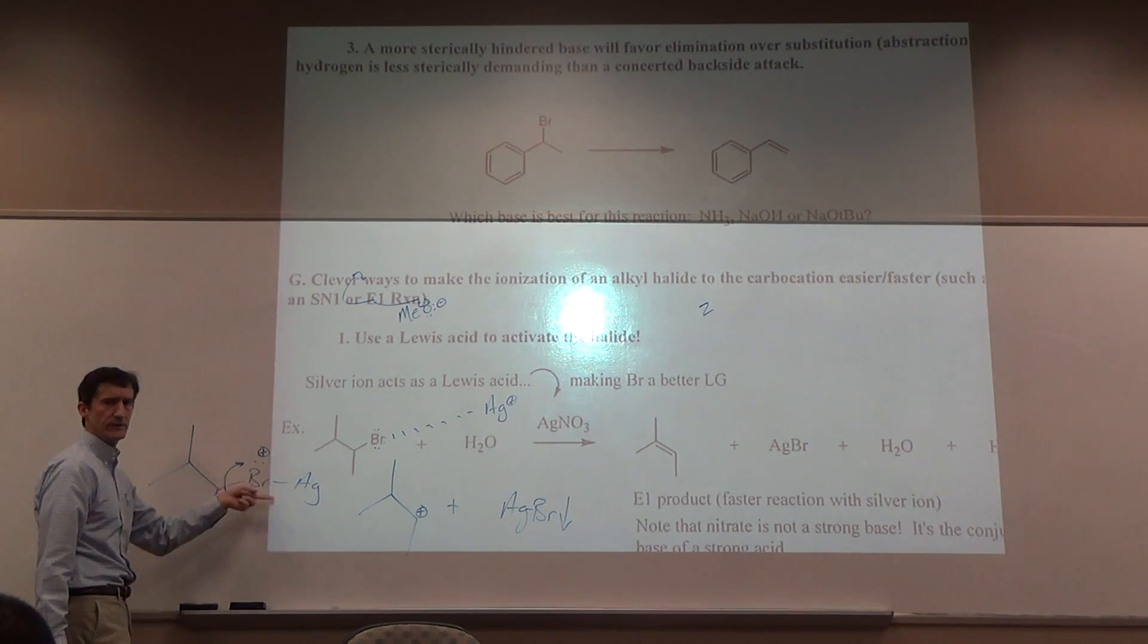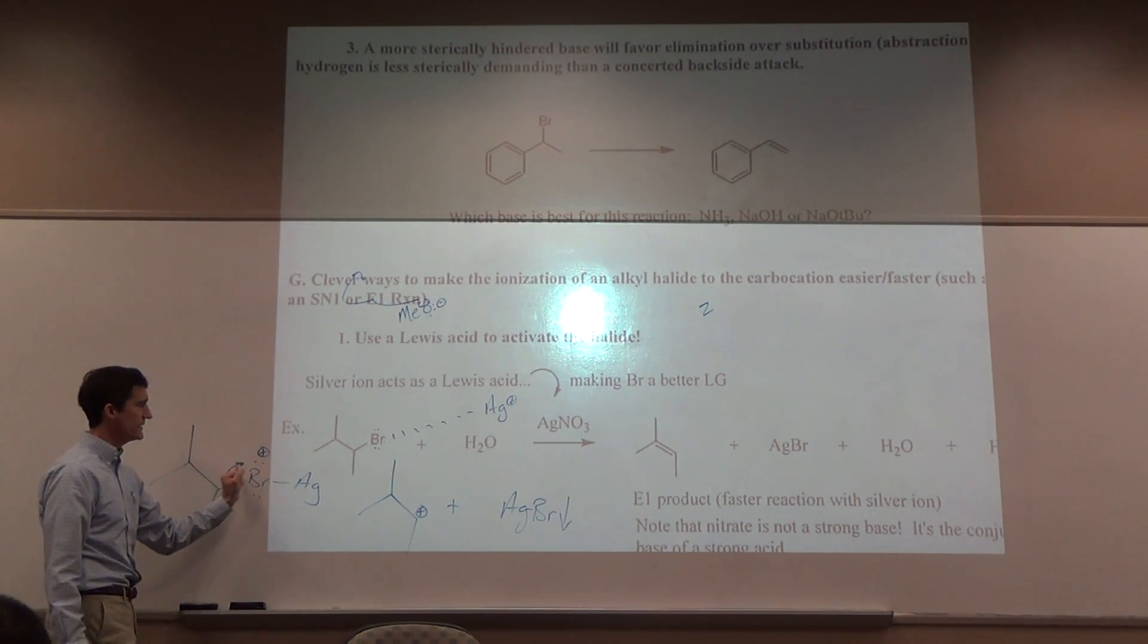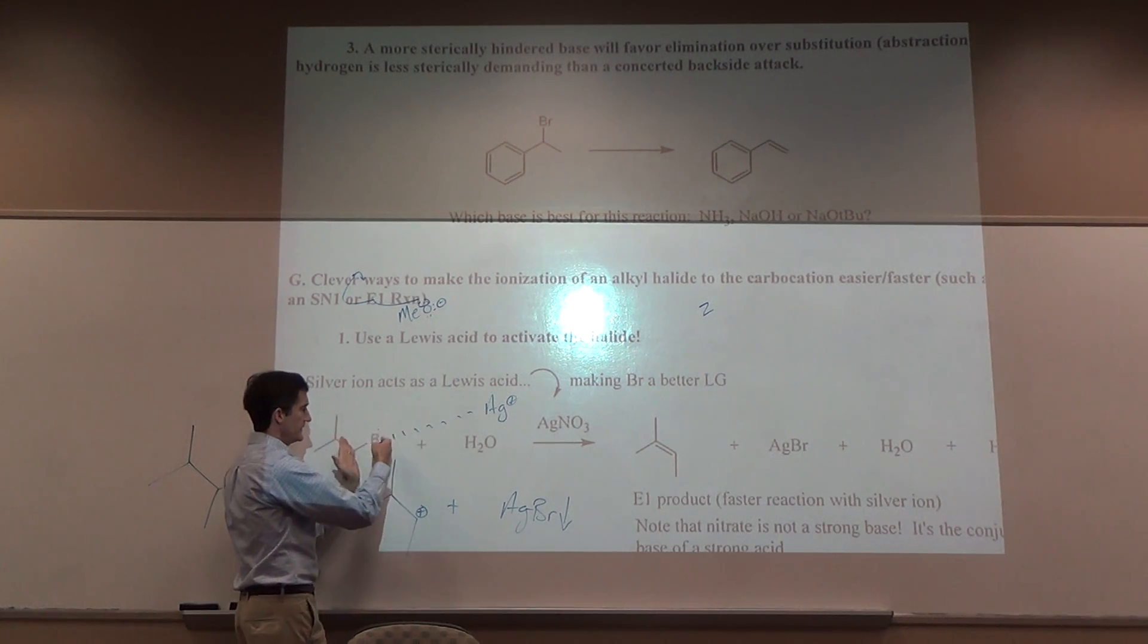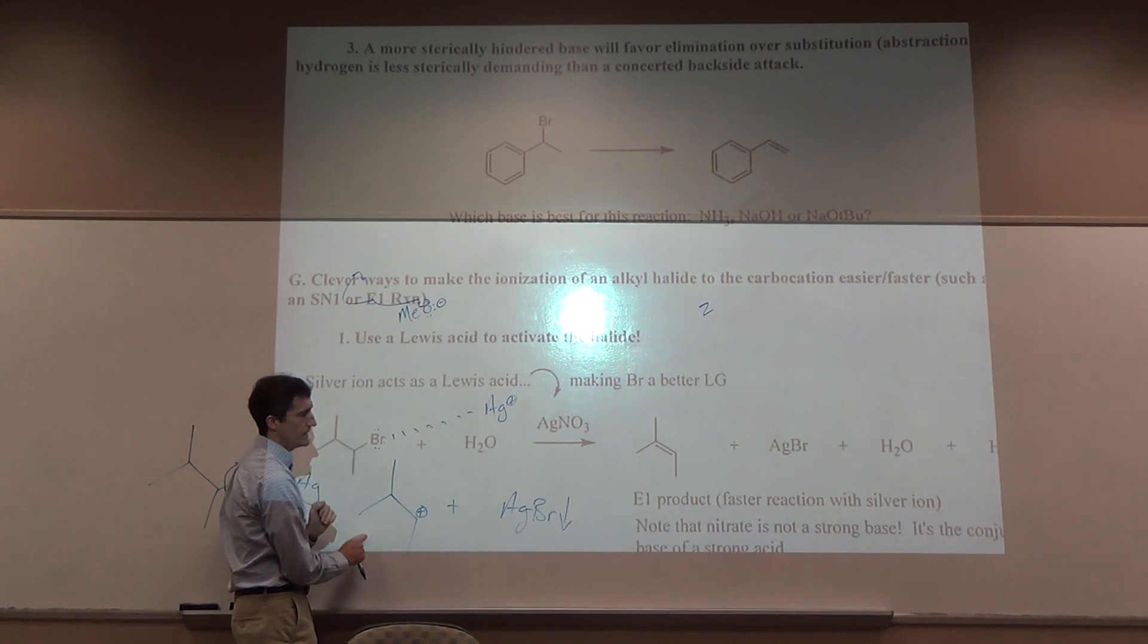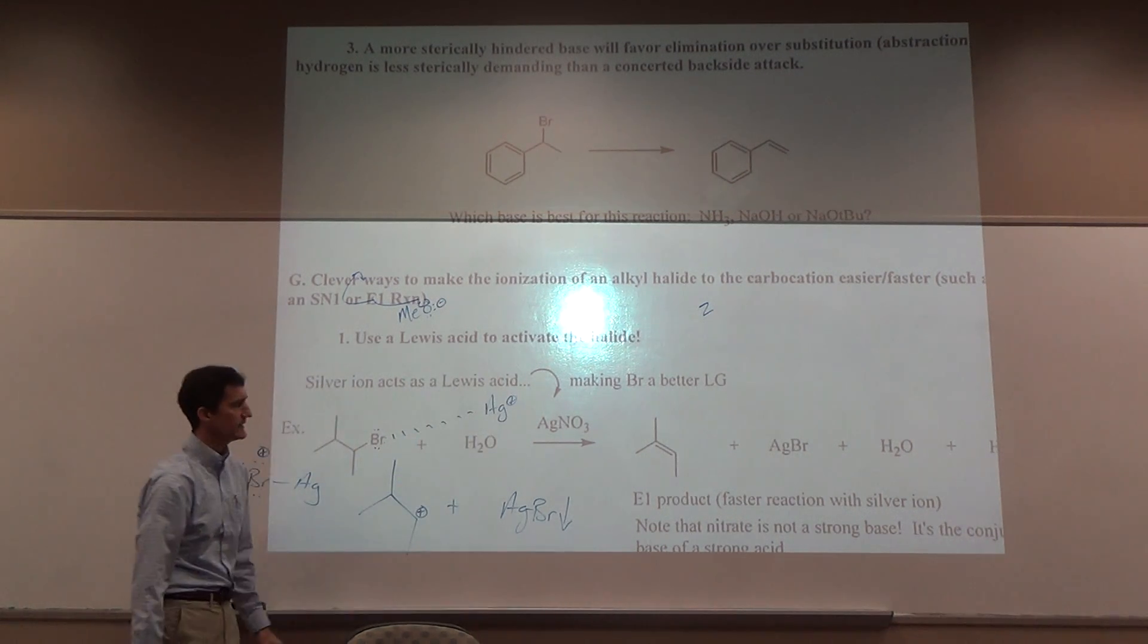It's almost like protonating the halogen. You don't protonate halogens with strong acid. But the silver ion makes a strong complex, and I'm not sure what the mechanism is, but it can facilitate the ionization. It strips it off. It makes forming the cation easier.